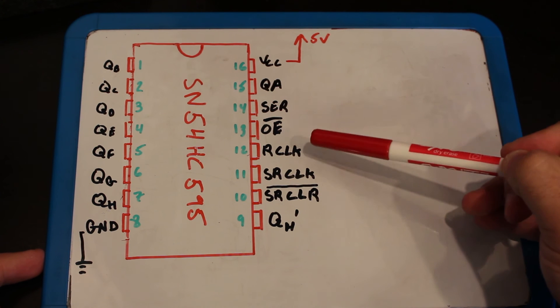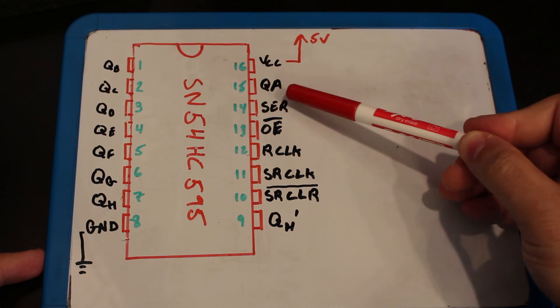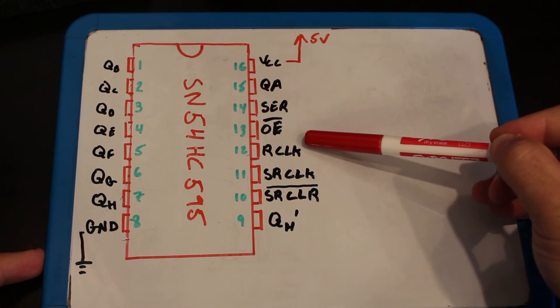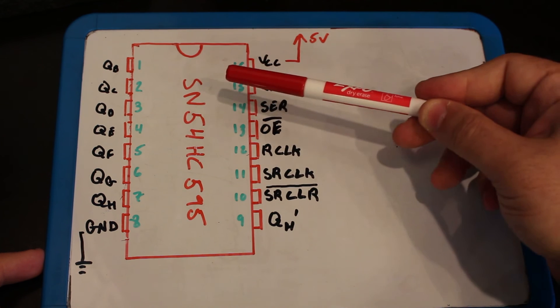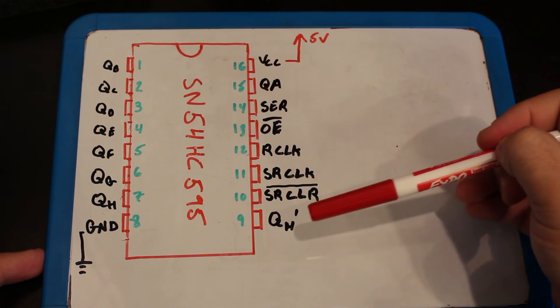Then you have the clock and the serial clock. The serial clock is the one that actually pushes one bit from the serial inside the register. And then the clock over here is what I call the latch, that's taking everything that is in the memory, pushing them to the QA all the way to QH. That way you can see the output.